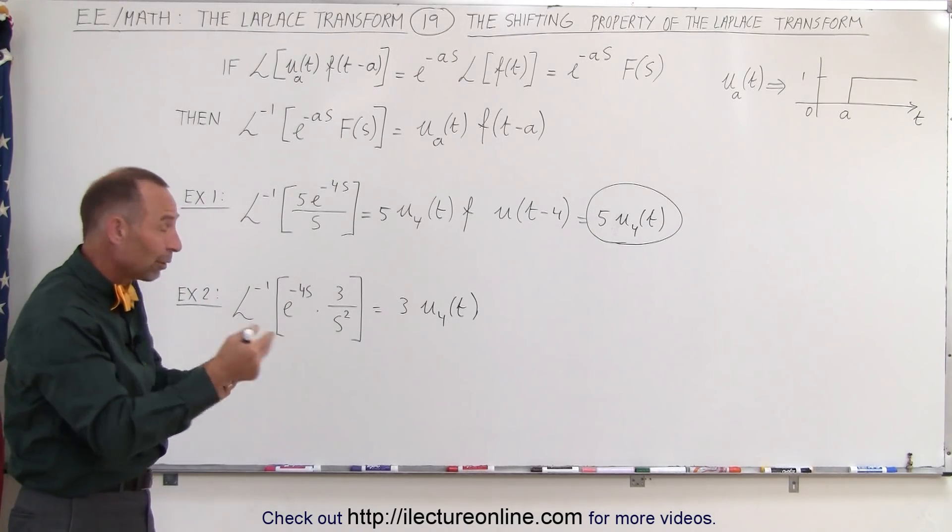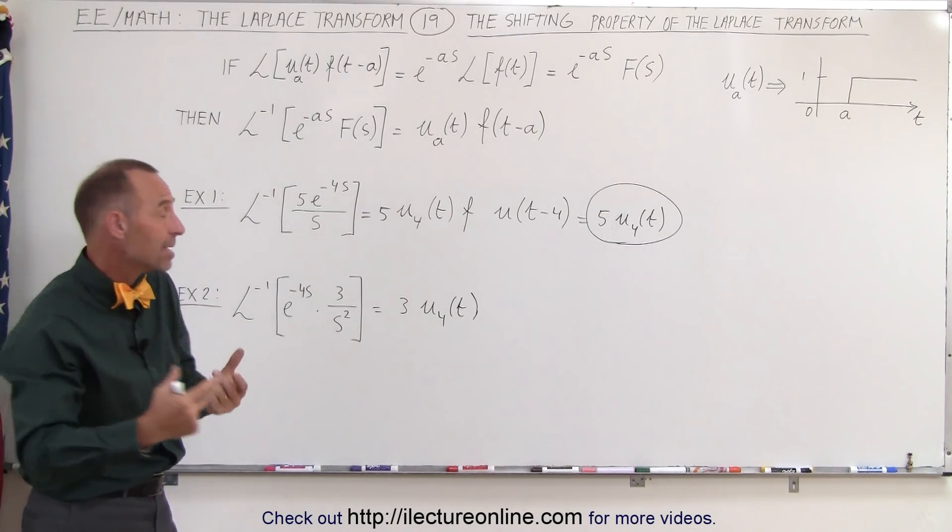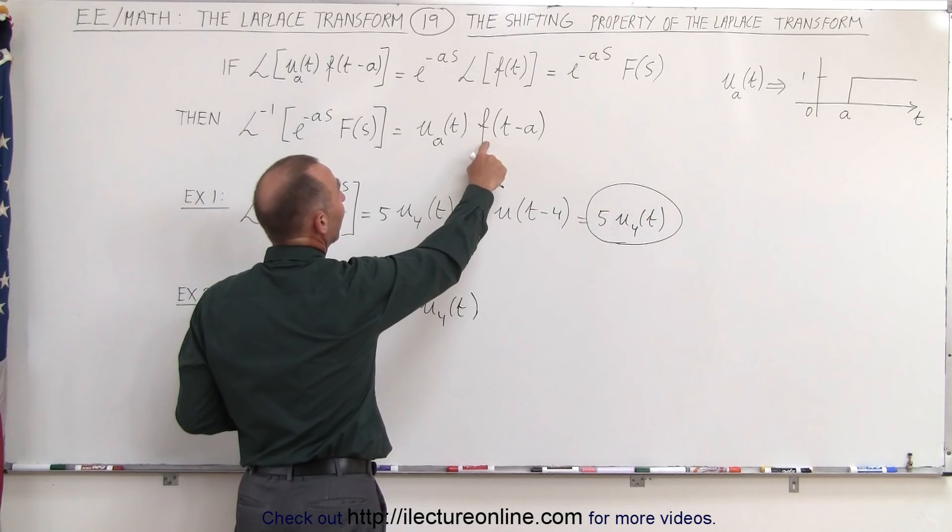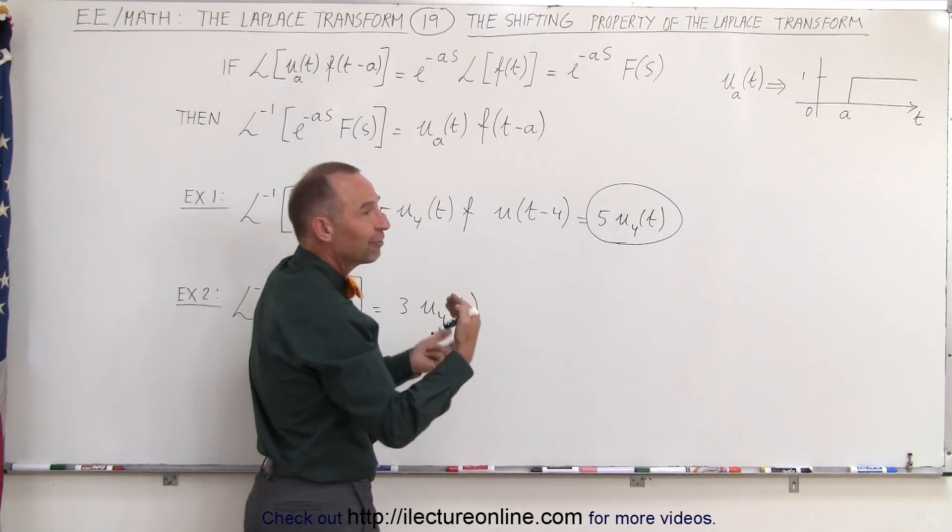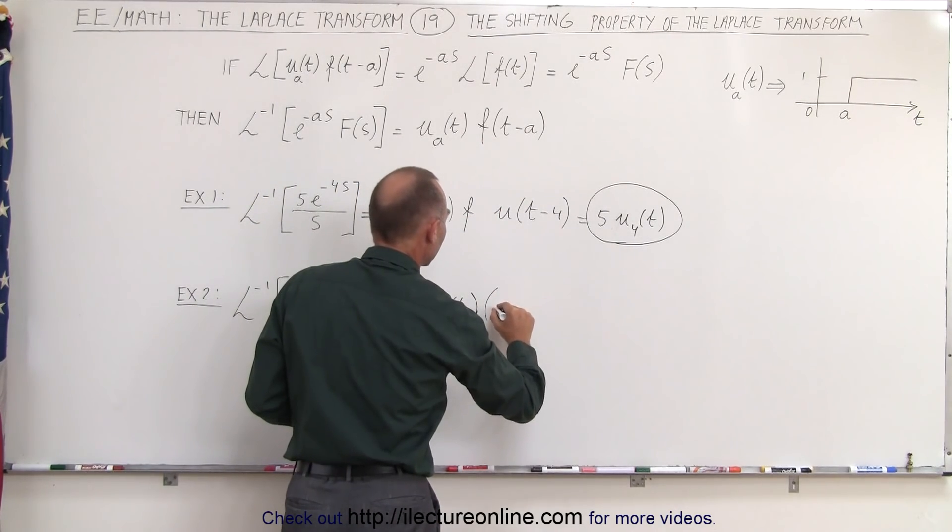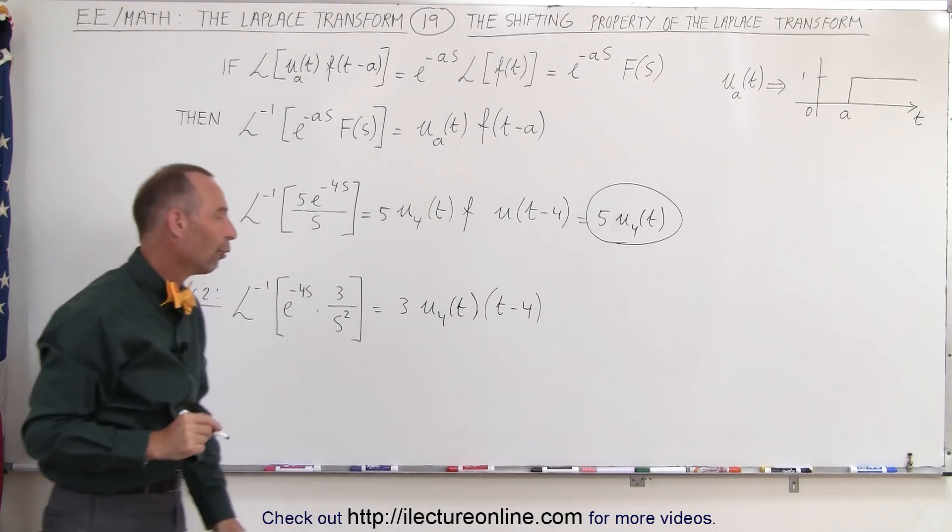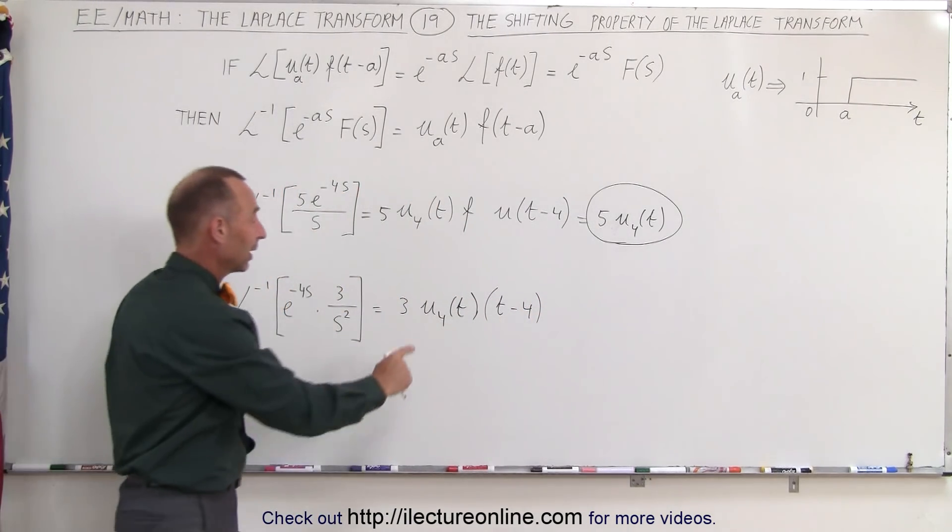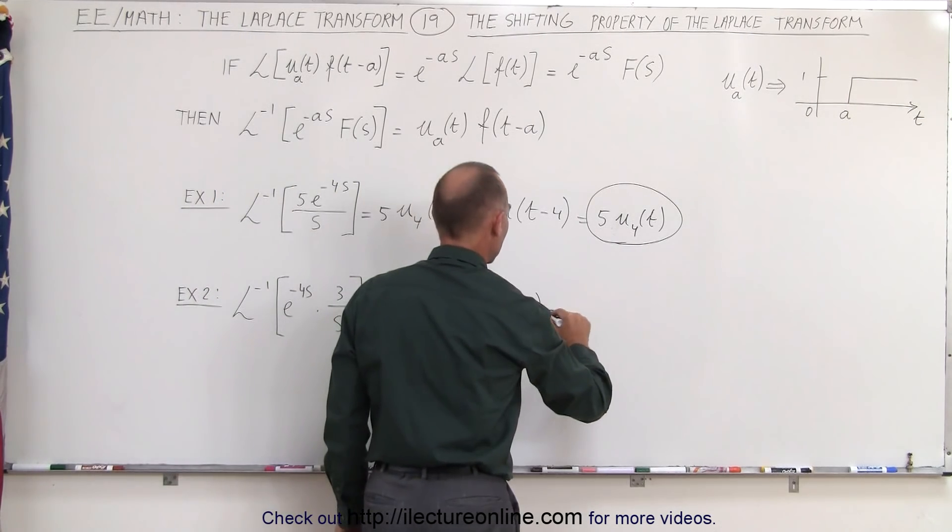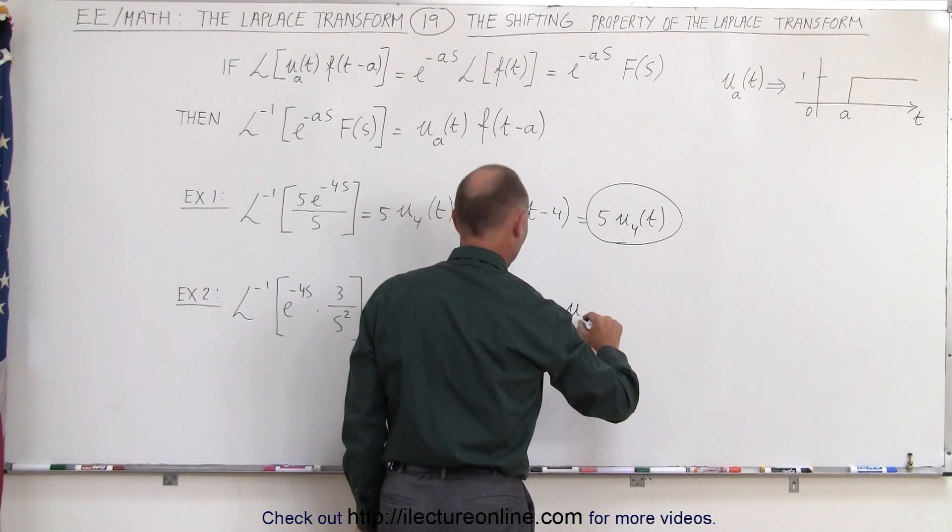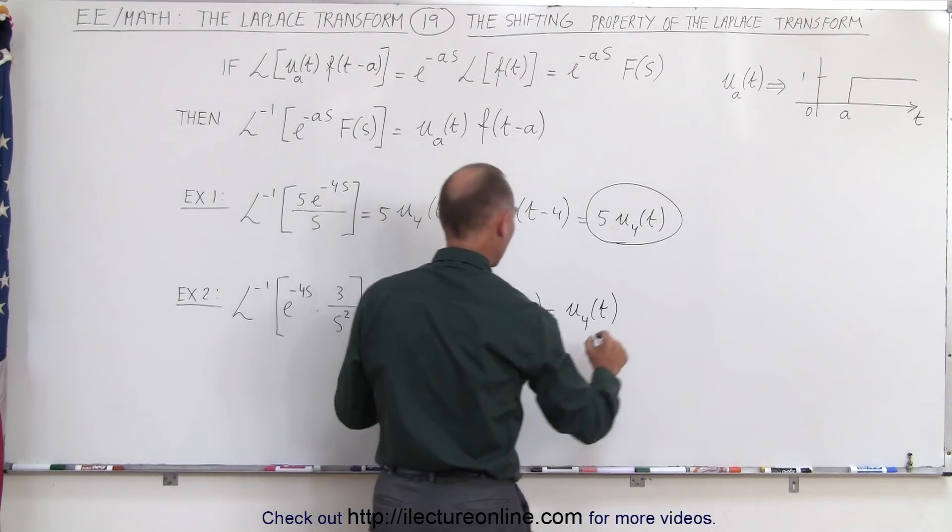The inverse transform of 1 over s squared is equal to t, but instead of writing f of t, we want to write f of t minus a, so we have to multiply this times t minus 4. In this case, of course, a is 4. Notice if we multiply times 3, this gives us the unit step function delayed by 4 seconds times the quantity 3t minus 12.